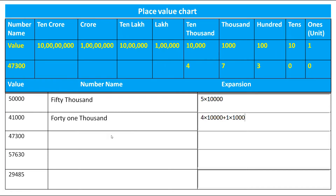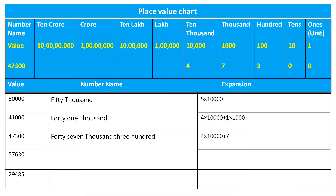Let's move to the next number. Placing it in the place value chart: 4 is on the 10,000 place, 7 is on the 1,000 place, and 3 is on the 100's place. 0 is on 10s and 0 on the unit place. So the number name is forty-seven thousand three hundred, and the expansion is 4 × 10,000 + 7 × 1,000 + 3 × 100.